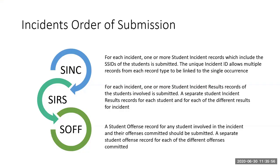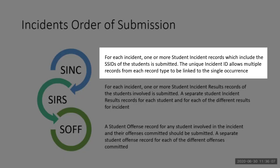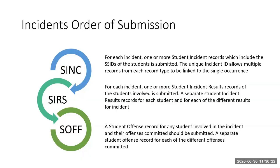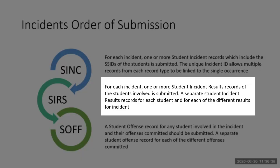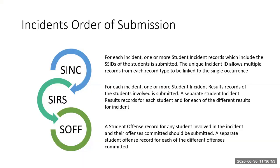Let's explain the order of submission for incidents. The first file submitted is your Student Incident File — we call that the SYNC. For each incident, one or more Student Incident Records, which include the SSIDs of the students submitted. The unique Incident ID allows multiple records from each record type to be linked to a single occurrence. The SYNC establishes your incident. You need it to submit a SIRS and a SOF. The SIRS would most likely be the second file. For each incident, one or more Student Incident Results Records of the students involved should be submitted. Each student in the incident needs a SIRS record.